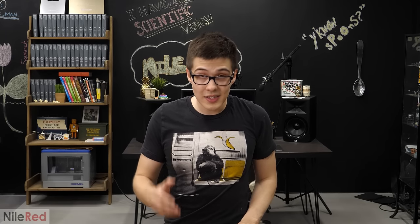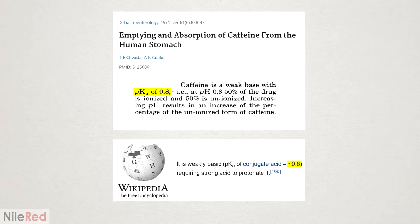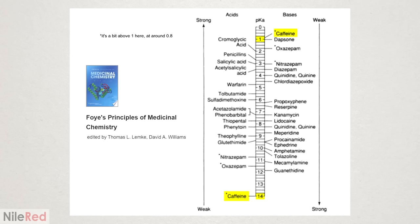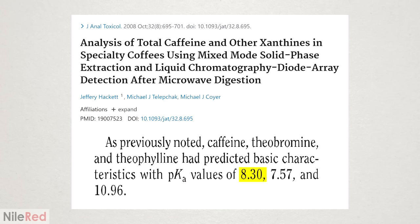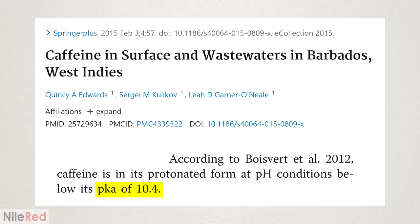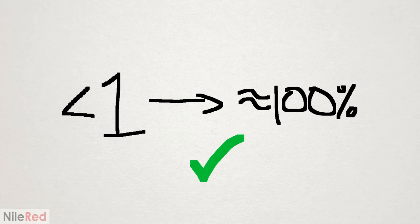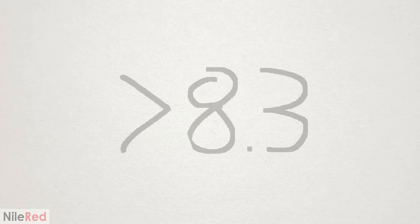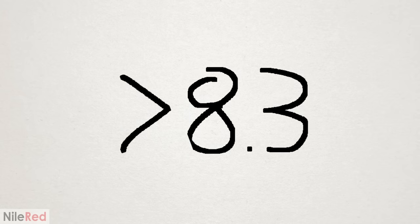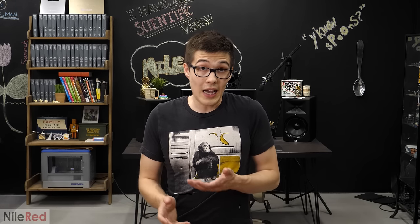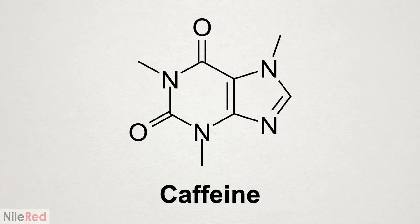I found some sources that said its PKA was as low as 0.6 or 0.8, and some said 14. Others said that it was 0.8 and 14, and some said that it was just 8.3 or 10.4. The problem here is that if it is actually less than 1, then 100% of it is extractable, and everything should work perfectly. But if it's actually 8.3 or above, it's closer to 0% extractable, and it's a complete waste of time. My personal feeling, just by looking at the caffeine molecule, was that it was probably closer to the lower values, so I figured it was still worth trying out.